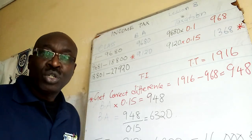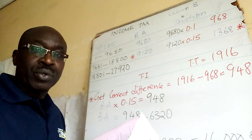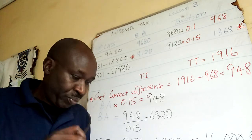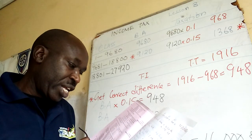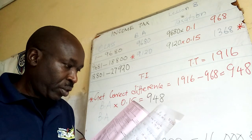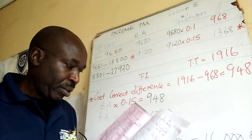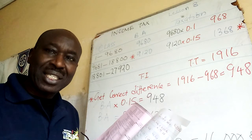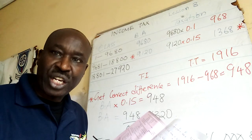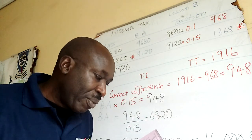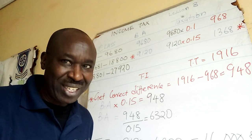First I want you to comprehend the table. The table shows monthly taxable income in Kenya shillings. Now Kerubo — the tax Kerubo paid, the PAYE, was 1,916 Kenya shillings.